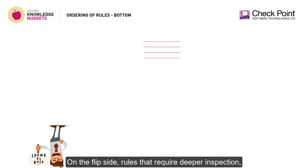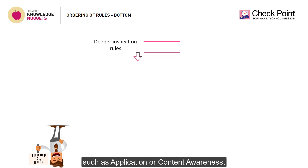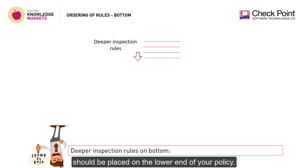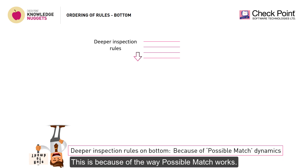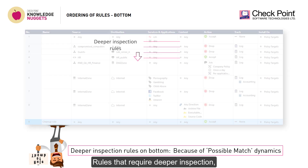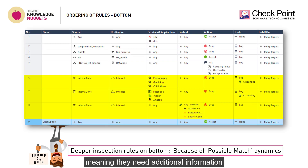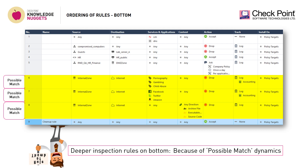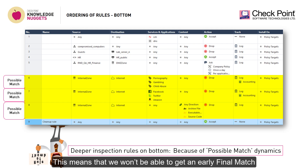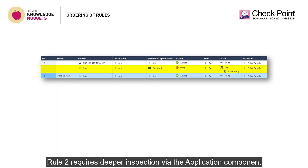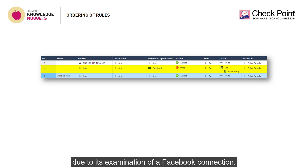On the flip side, rules that require deeper inspection — such as application or content awareness — should be placed on the lower end of your policy. This is because of the way possible match works. Rules that require deeper inspection, meaning they need additional information in order to process the connection, will stay in the state of possible match until they receive this information. This means we won't be able to get an early final match on simpler connections if they are placed below such processing-heavy rules. For example, in this case, rule 2 requires deeper inspection via the application component due to its examination of a Facebook connection.